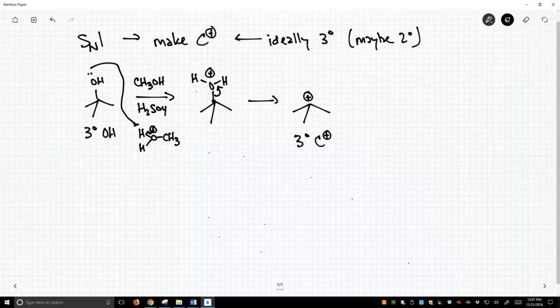So what happens to carbocations? Carbocations suffer two fates. They either get attacked or they lose a beta-hydrogen. In this case, we're in a reaction where we have methanol, and normally you wouldn't have gobs of sulfuric acid, you'd have just a little bit of sulfuric acid, a catalytic amount of sulfuric acid with a lot of methanol. So there's plenty of methanol floating around.